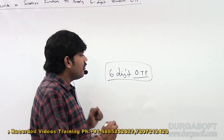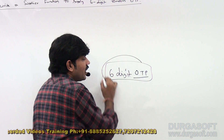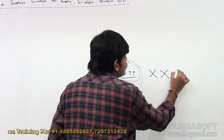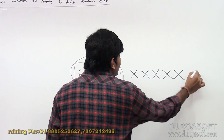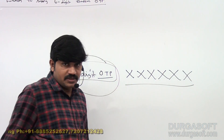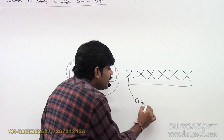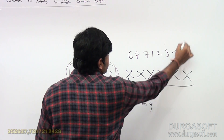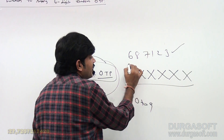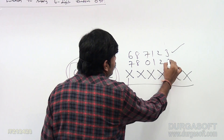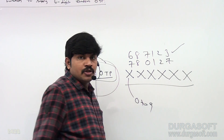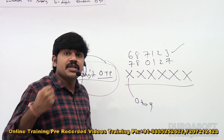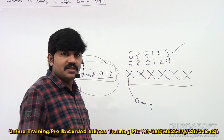How can you do that? Each digit — there are six digits total — and each digit can be zero to nine, anything. Something like six, eight, seven, one, two, three — or seven, eight, zero, one, two, seven. Any six-digit number itself is treated as an OTP, so we need to generate some random six-digit number.